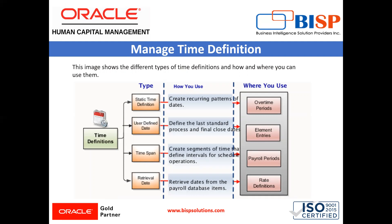This image shows the different types of time definitions, how and where you can use them. Static time definition: used to create recurring patterns of dates, used under overtime periods. User defined date: defines the last standard process and final close date, used in element entries. Time span: creates segments of time that define intervals for scheduled operations, used in payroll periods. Retrieval date: retrieves dates from the payroll database item, used in rate definitions.